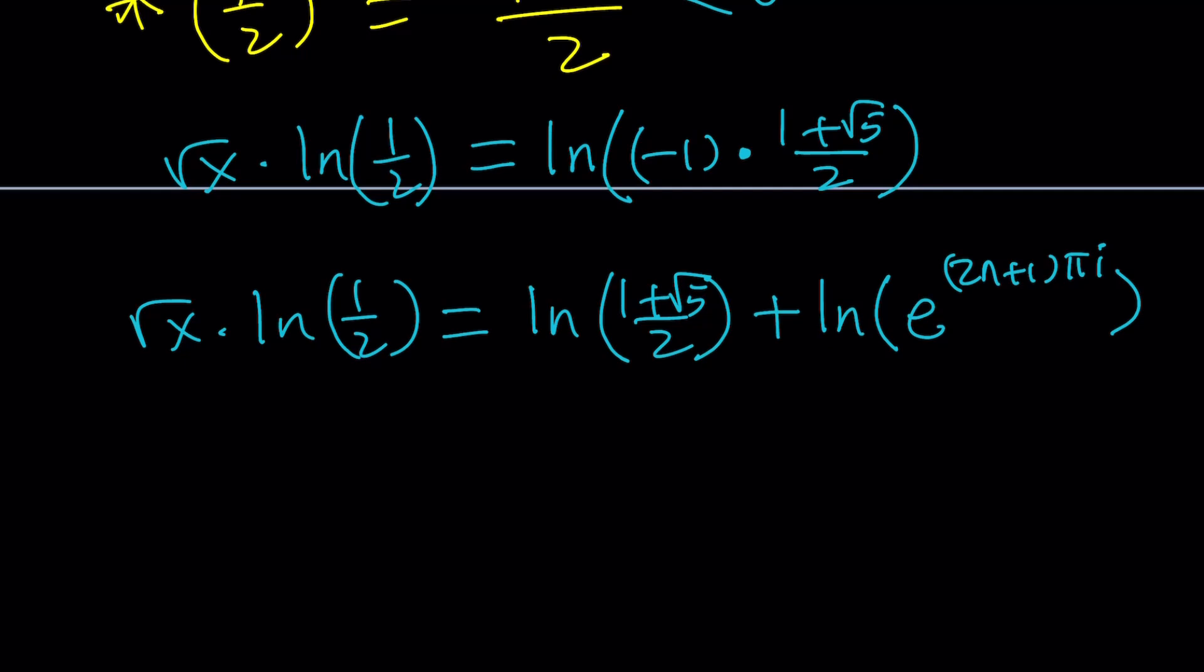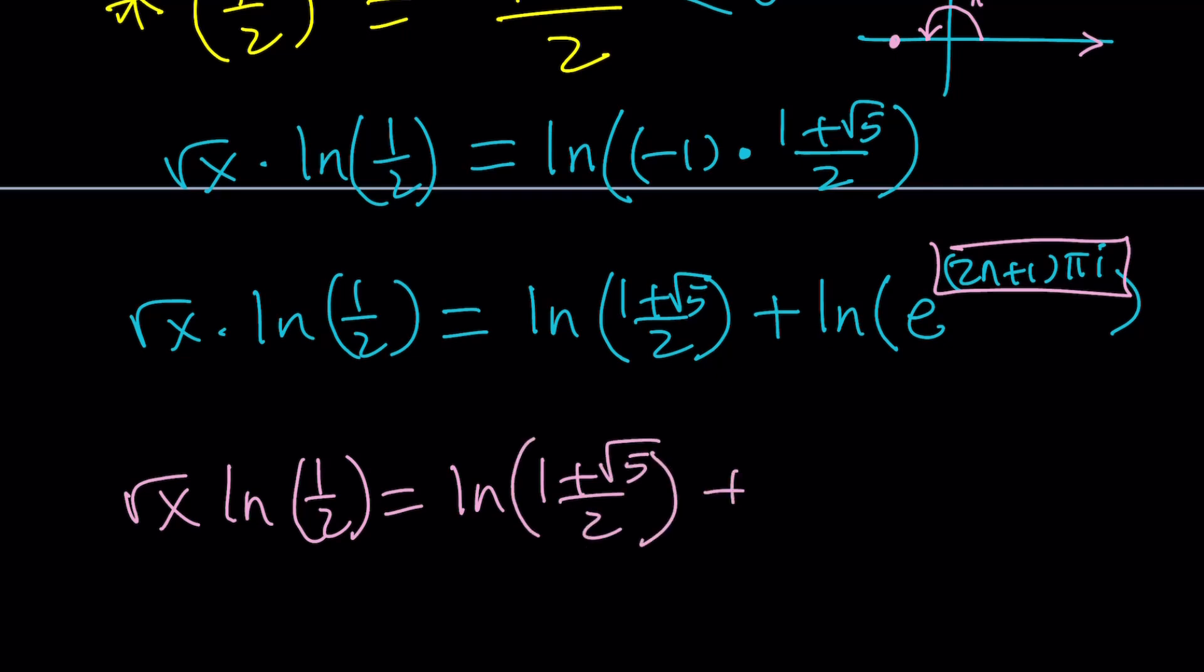Write it as ln 1 plus root 5 over 2, which is a positive logarithm, plus ln of negative 1. Actually, I should write log of negative 1. And negative 1 can be written as e to the power 2n plus 1 multiplied by pi i. In other words, if you consider odd powers of pi i, you will get e to the power that will give you negative 1. Because if you think about it on the Argand plane, this is where negative 1 is. And its argument is pi. And then pi plus multiples of 2 pi is going to give you odd multiples of pi. They are all equivalent to pi in that sense. So, you can bring it to the front because ln e to the z is just z. This becomes square root of x ln 1 half equals ln 1 plus root 5 over 2 plus 2n plus 1 pi i.